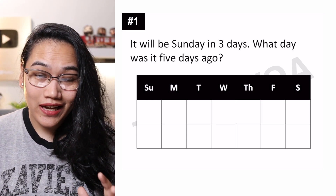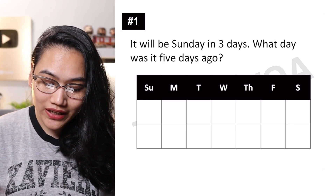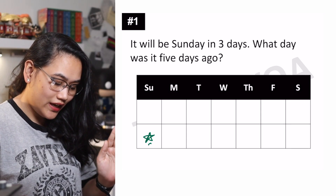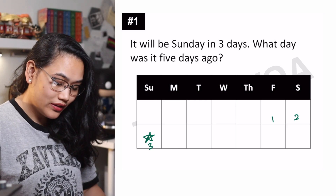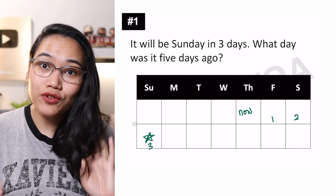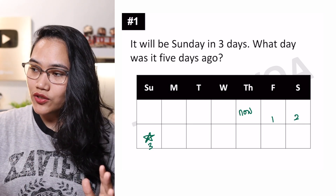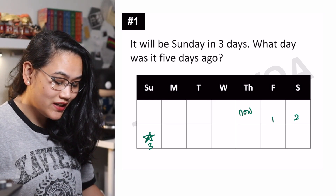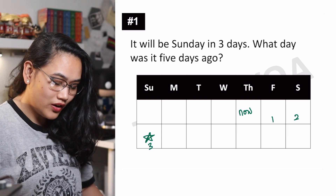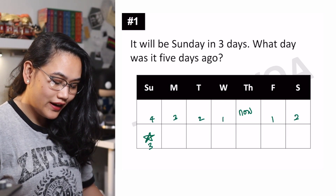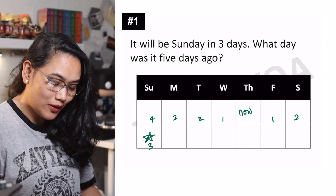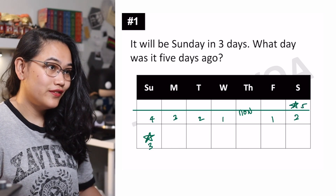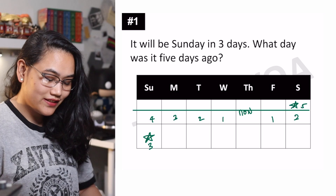So again, hinahanap natin yung now. Kung sabi niya, it will be Sunday in three days — that would be this right here, and that is in three days. So ito yung third day, second day, and first day bago yung now. Ito ay nasa future, so ito yung now — that's one, two, third day would be yung Sunday. Ang tanong, what day was it five days ago? So we can just move one, two, three, four, and dahil uurong tayo ng isa pang week, that would come back here to a Saturday. This is day five ng five days ago. So the answer is Saturday.